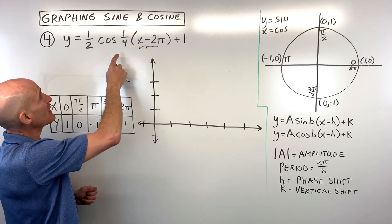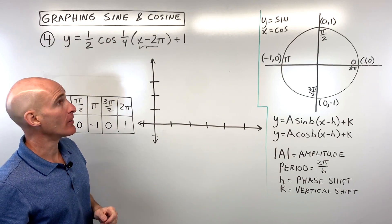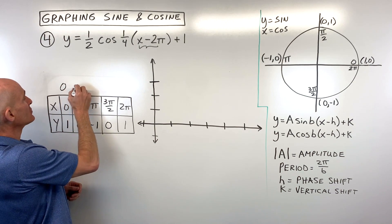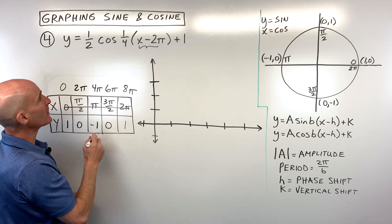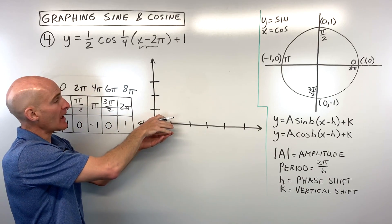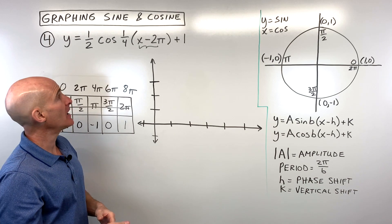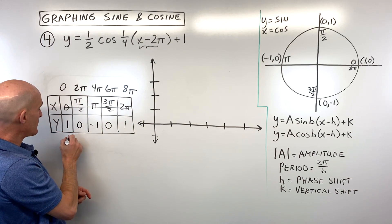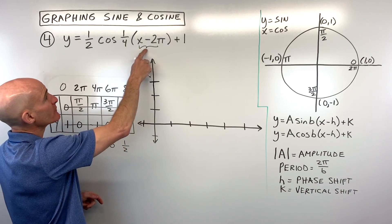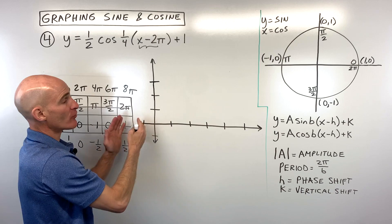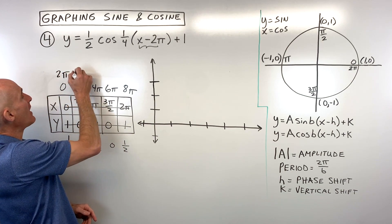Looking at the transformations: the one-fourth grouped with x has the reciprocal effect, multiplying all x-values by four: 0, 2π, 4π, 6π, 8π. Cross out old x-values. The one-half in front of cosine affects the amplitude — since it's between zero and one, it's a vertical shrink, so waves are only half as high. Multiply all y-values by one-half. Now the phase shift: minus 2π grouped with x has the opposite effect, shifting right 2π, so we add 2π to each x-value.